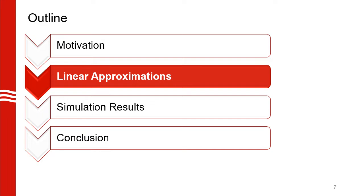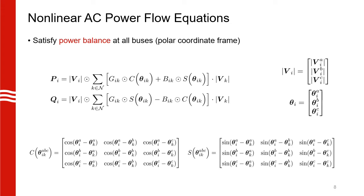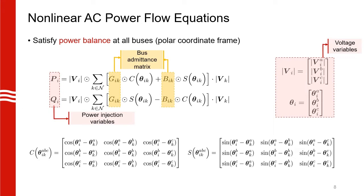Now, we will look at the different linear approximations. Before that, just to give you a better idea of what exactly we are linearizing, here is the non-linear power flow equations in the polar coordinate frame. All parameters in the bold here are the optimization variables. As you can see, the power variables P and Q are non-linear functions of our voltage variables. G and B here are the conductance and susceptance sub-matrices of the bus admittance matrix that basically defines the network topology.